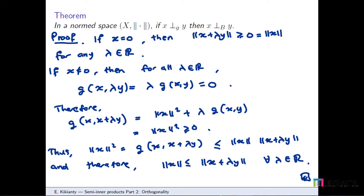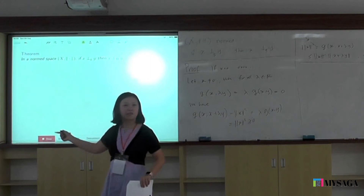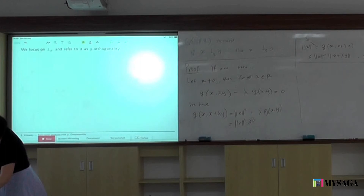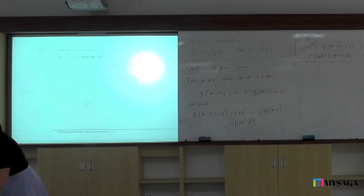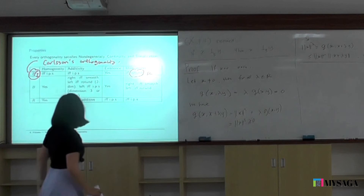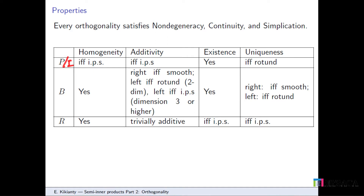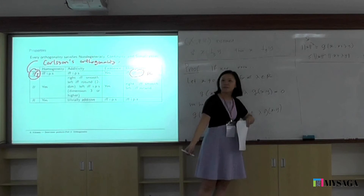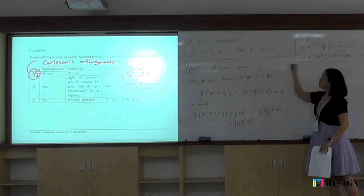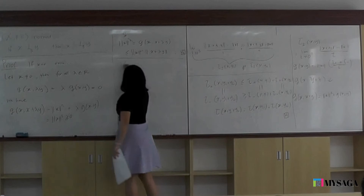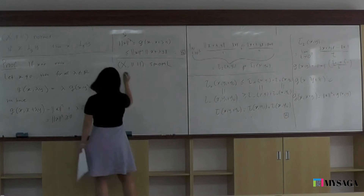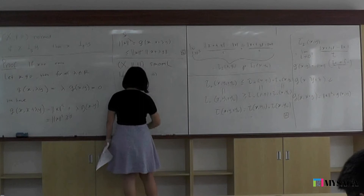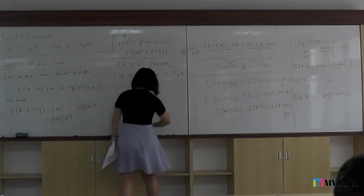Now what about the converse? We mathematicians like this question. Looking at the chart, additivity for Birkhoff orthogonality to the right holds if and only if the space is smooth. So if I add smoothness to my space, I can get the reverse implication. The converse is not true in general, unless the space is smooth. If the space is smooth and x is orthogonal to y in the Birkhoff sense, then x is orthogonal to y in the G sense — i.e., Milicic's G-orthogonality.